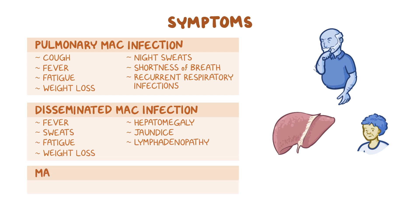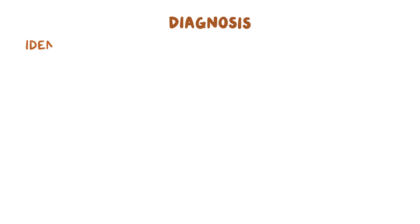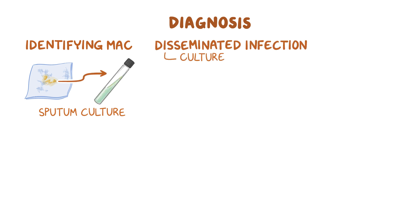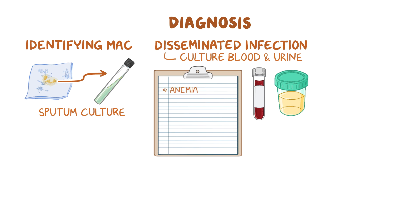With MAC lymphadenitis, there are usually swollen lymph nodes mainly on one side of the neck. Diagnosis is established by identifying MAC in the sputum using staining methods and culture. If disseminated infection is suspected, culture specimens should also include blood and urine. Also, with disseminated infection, a complete blood count shows anemia and occasionally pancytopenia due to bone marrow suppression.